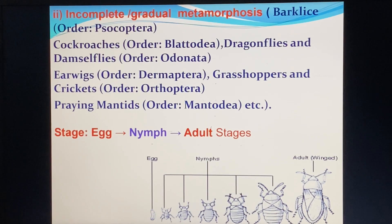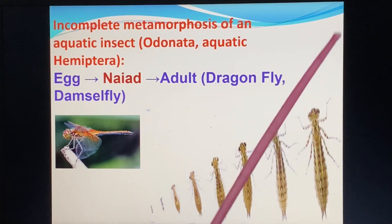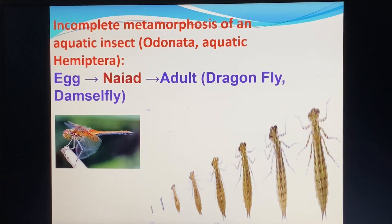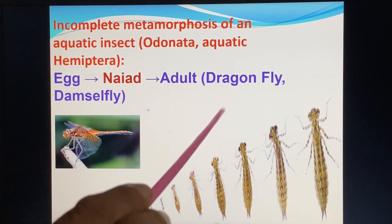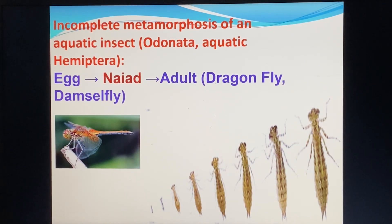This is found in all exopterygote insects. In incomplete metamorphosis in aquatic insects — that is, in Odonata and Hemiptera — nymphs are found.